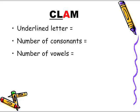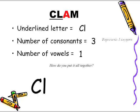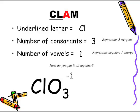Next example — CLAM. The underlined letters are CL. Number of consonants: three. Number of vowels: one. So how do we put it all together? CL, three consonants means three oxygens. Number of vowels: one, so one negative charge — negative one. What element are we making reference to? We're making reference to chlorine, but because it's a polyatomic and it has oxygen present, we call it chlorate.